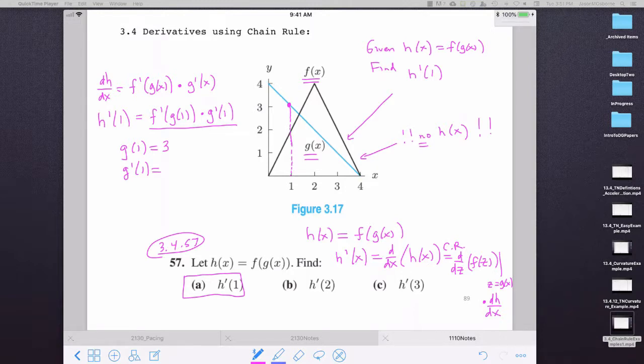And g prime of one, what does that mean? That means what's the slope of the tangent line to the function g. Function g is a line, so its tangent line should be easy to compute. It goes from the point zero, four, to the point four, zero, which means that the line has a slope of a rise of negative four divided by a run of four is negative one. So g prime of one is negative one.